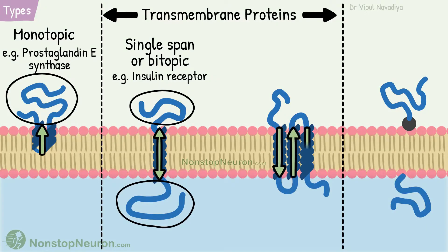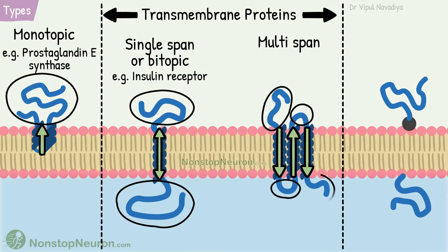Some transmembrane proteins span the membrane multiple times. They are called multispan transmembrane proteins. They have more than two segments outside the membrane and are also called polytopic proteins. For example, G protein-coupled receptors are multispan membrane proteins.